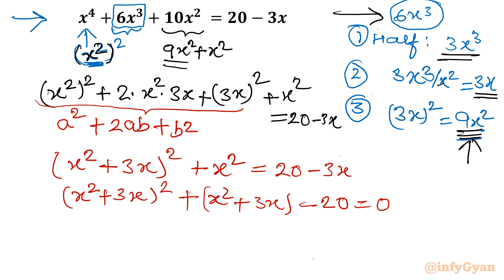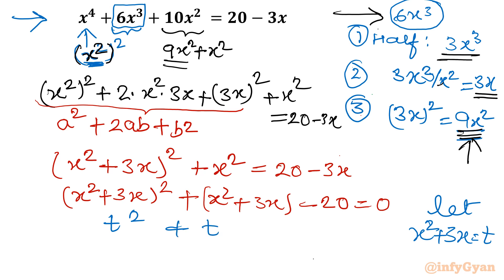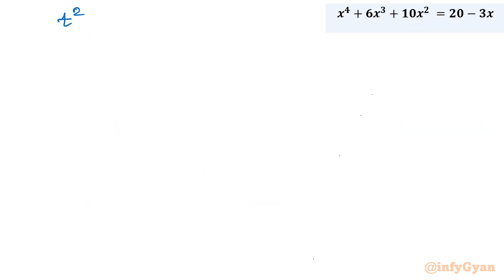Now the obvious substitution is visible. Let t = x² + 3x. Then the equation becomes t² + t − 20 = 0. Remember our substitution — we will put it back once we calculate the value of t.